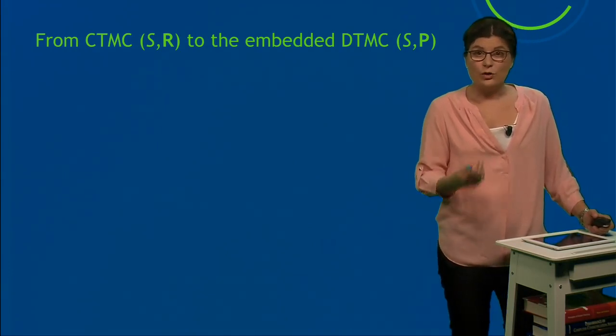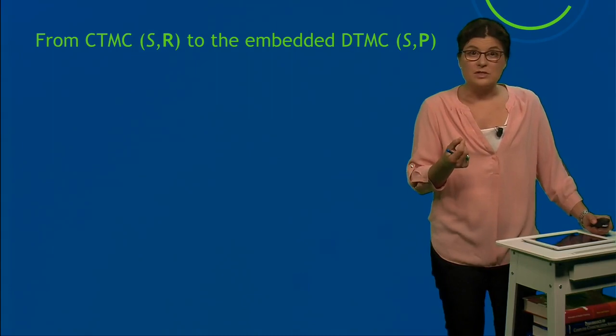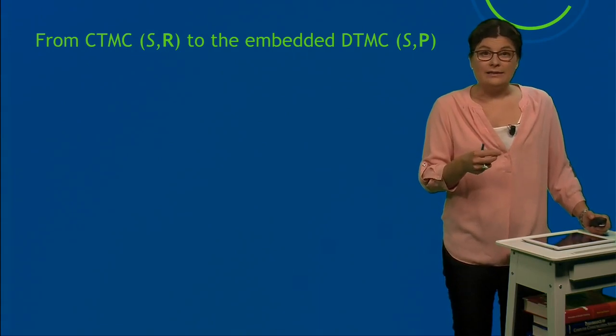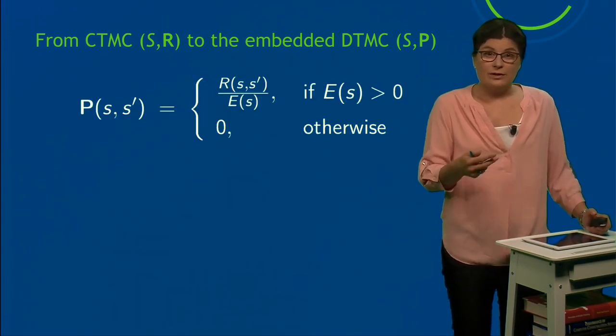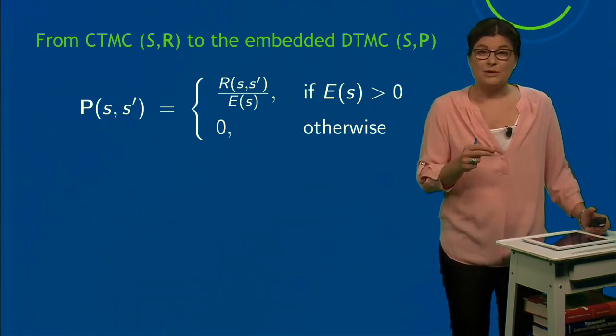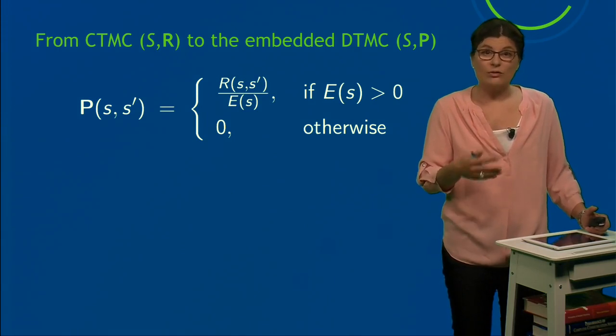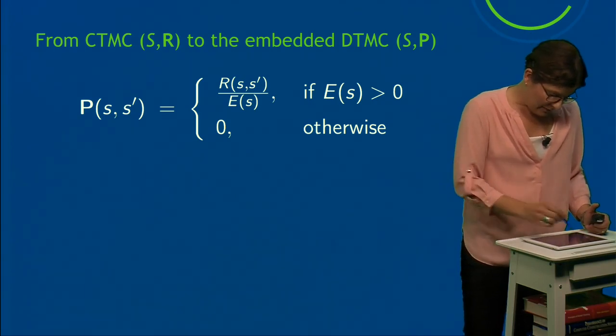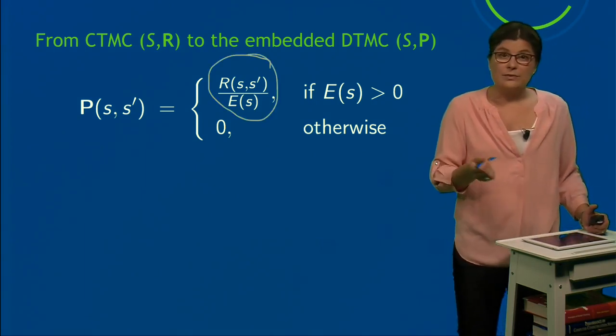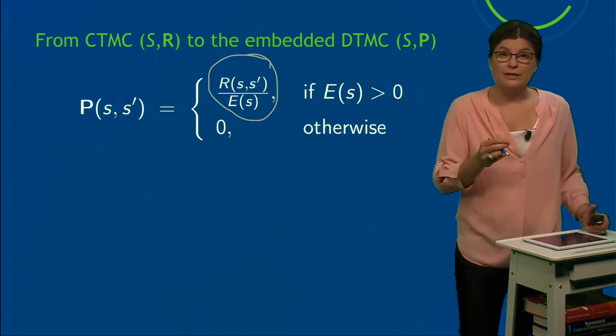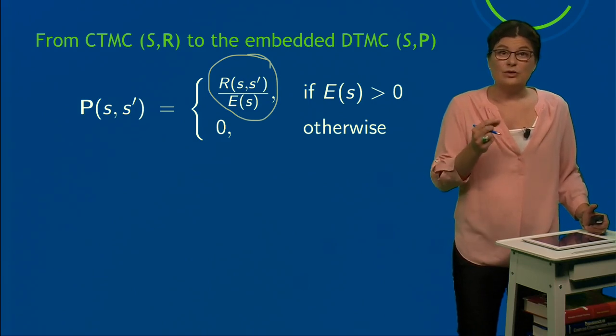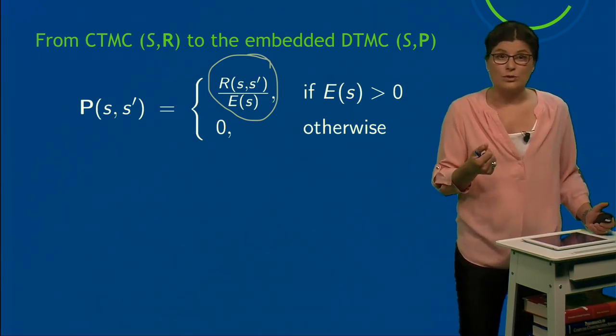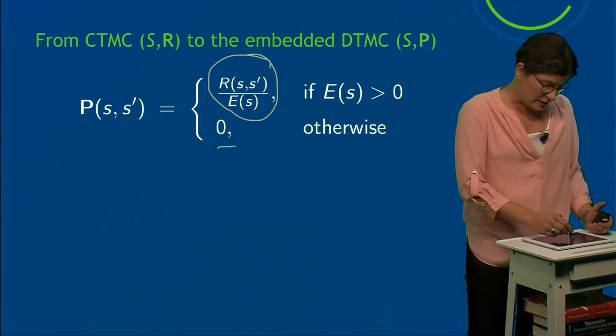Now I can also go the other way around. I can start with the CTMC and compute the so-called embedded DTMC. And let me show you how this is done. So this is the formula you have to use: P(s,s') is the entry in the probability matrix of the embedded DTMC, given by the rate matrix—so the rate from s to s' divided by the exit rate of state s. And this you do if the exit rate is greater than 0, meaning if the state is not absorbing. And otherwise, it's just 0.